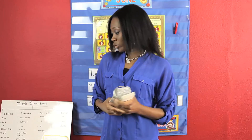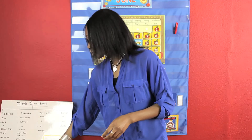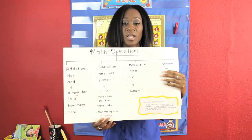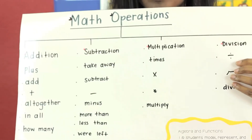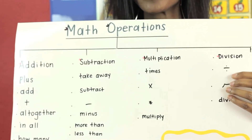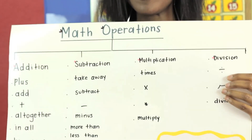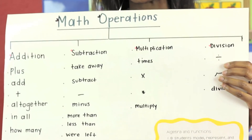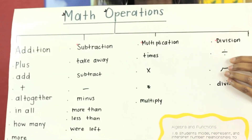Another great resource for teaching low-level fourth graders is visuals. Having visuals in front of the classroom can give students a reference while they're doing their independent work.